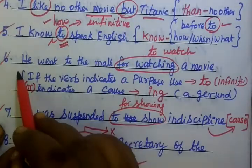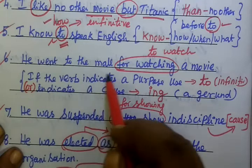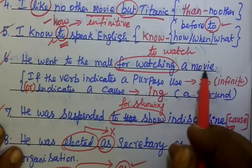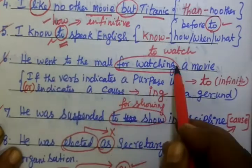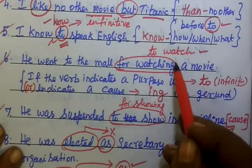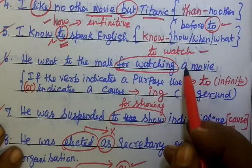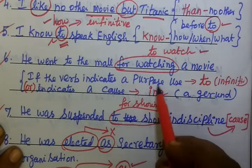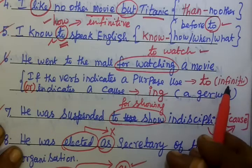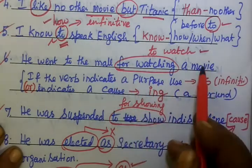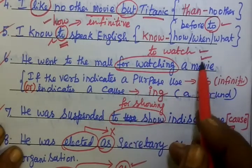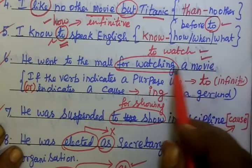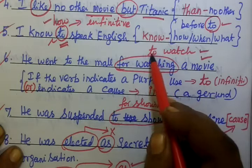See the fourth one: He went to the mall for watching a movie. Here you are using 'for' with two words. The rule is: if the verb indicates a purpose, we use the 'to' infinitive. Going to the movie is a purpose, so we use the infinitive form.